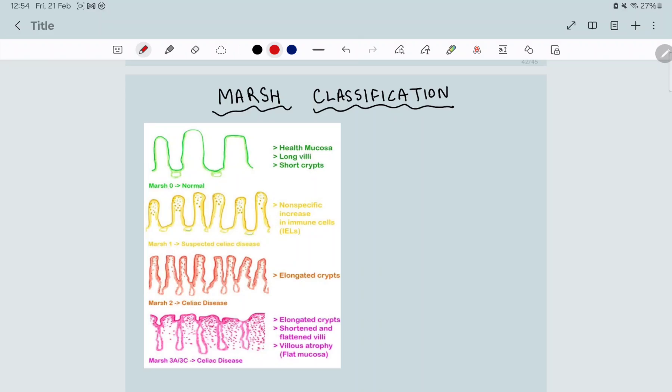In Marsh 1 where we suspect celiac disease, you can see lymphocytes are being aggregated. In Marsh 2 there are elongated crypts, and in Marsh 3 there are villus atrophies also present, but the mucosal thickness remains the same.